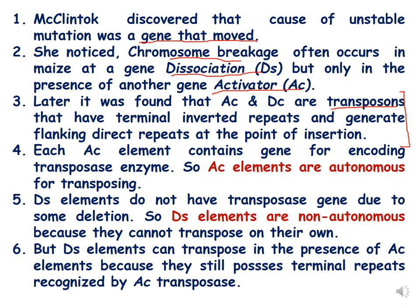McClintock discovered that the cause of unstable mutation was a gene that moved. She noticed chromosome breakage often occurs in maize at a gene called Dissociation, represented by DS, but only in the presence of another gene called Activator, represented by AC. Later it was found that AC and DS are transposons that have terminal inverted repeats and generate flanking direct repeats at the point of insertion. Each AC element contains a gene encoding transposase, so AC elements are autonomous for transposing. DS elements do not have a transposase gene due to deletions, so DS elements are non-autonomous and cannot transpose on their own. However, DS elements can transpose in the presence of AC elements because they still possess terminal repeats recognized by AC transposase.